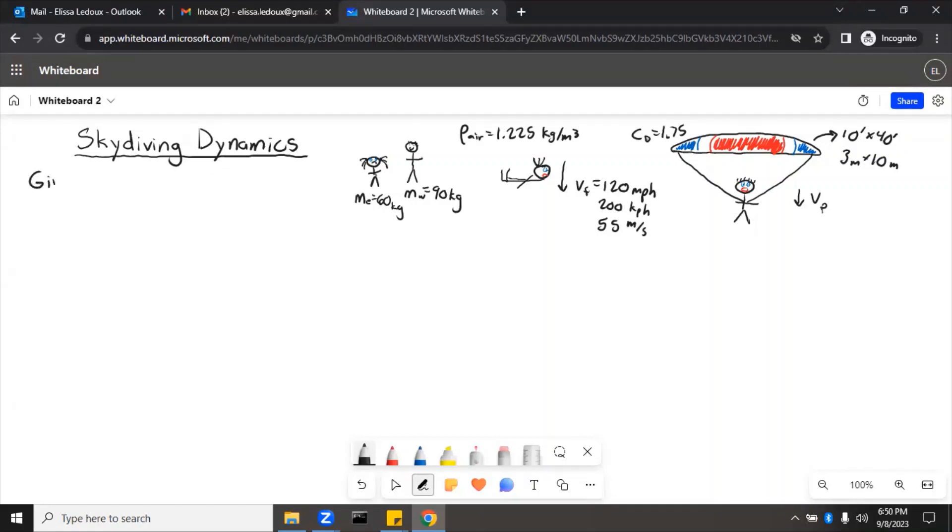So say given mass of the people, we'll say M2 because it's two people. So M2 equals 60 plus 90 equals 150 kilograms. So given masses of the people, the density of air, the terminal velocity for no parachute, call that V final, the drag coefficient for the parachute, call that CDP, and the area of the parachute, call that AP, which is the 3 meter by 10 meter, we need to find.